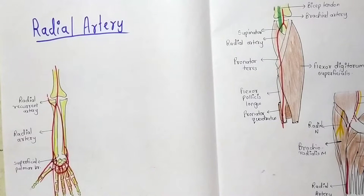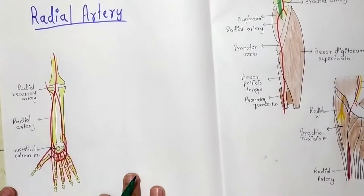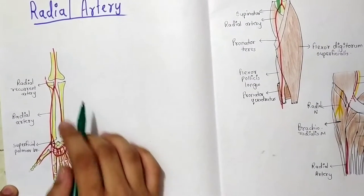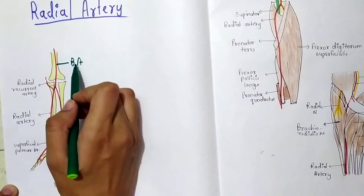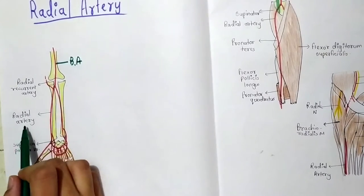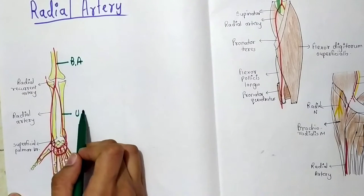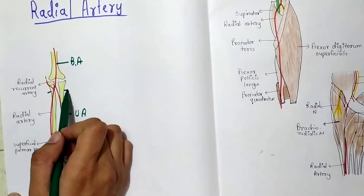Welcome to my YouTube channel, myself Alfiya Qureshi. In the last video we talked about the brachial artery, and in this video we will be talking about the radial artery, which is the smaller terminal branch of the brachial artery. The brachial artery terminates into two branches: the radial artery and the ulnar artery at the neck of the radius bone.